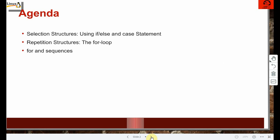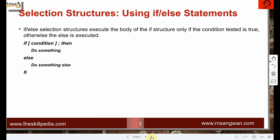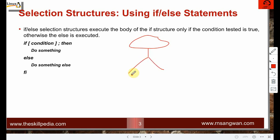This session covers the while loop and functions. For repetition structures we have the for loop. The if-else selection structure executes the body of the if only if the condition is true, otherwise else is executed. In the flow diagram: we check the condition, if true we execute one set of statements, if false we execute another set, then terminate.